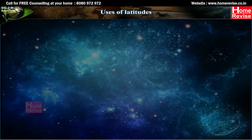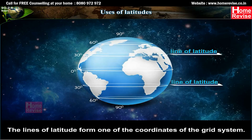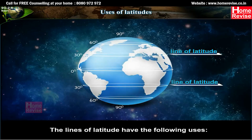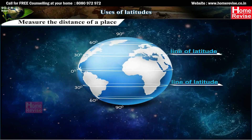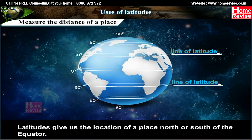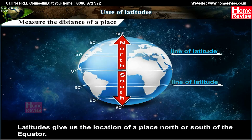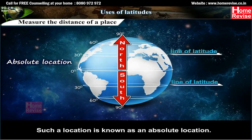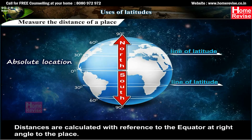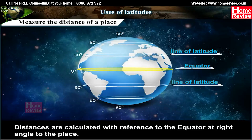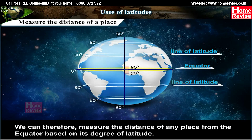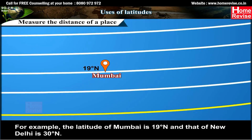Uses of Latitudes: Lines of latitude form one of the coordinates of the grid system. Latitudes give us the location of a place north or south of the equator, known as an absolute location. Distances are calculated with reference to the equator at right angles to the place. We can therefore measure the distance of any place from the equator based on its degree of latitude. For example, the latitude of Mumbai is 19 degrees north and that of New Delhi is 30 degrees north.